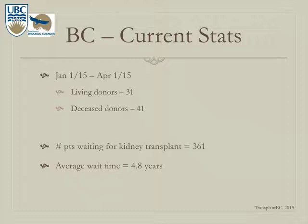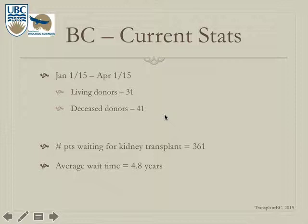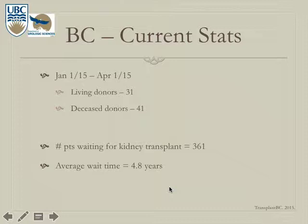Currently in BC, the first three months of the year saw 31 living donors and 41 deceased donors, putting us on pace for 124 living and 164 deceased annually — which would exceed the rate of 40 per million population. In 2014, there were 101 deceased and 104 living donors in BC, already just over 40 per million. The waitlist currently stands at 361 patients, with an average wait time of 4.8 years, and people are still dying waiting.